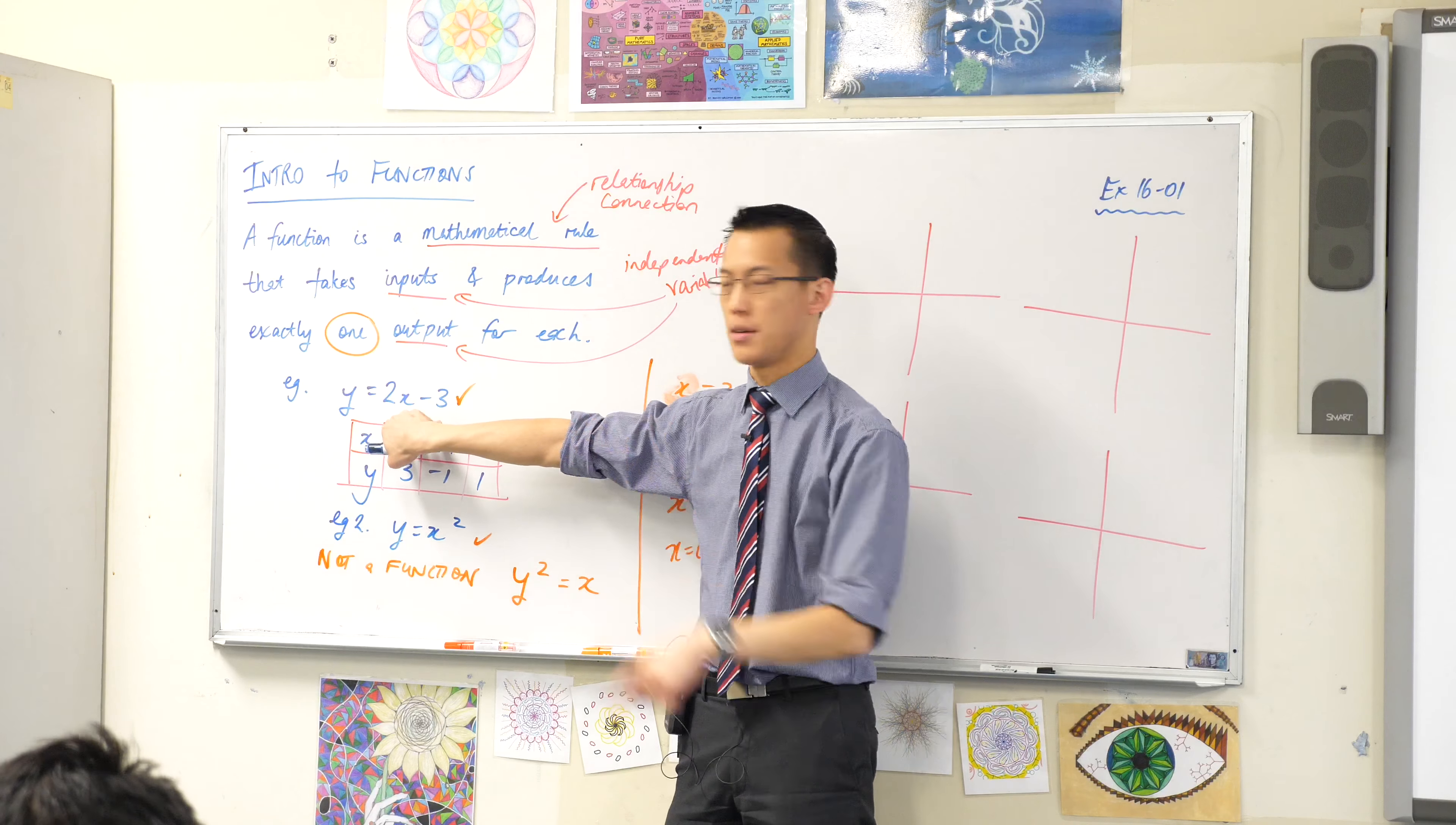What was this shape again? It's a circle. What can you tell me about this circle? Where's its center? It's at the origin. And what's its radius? One.